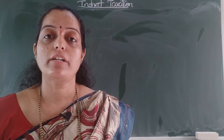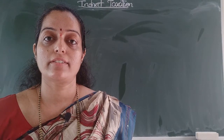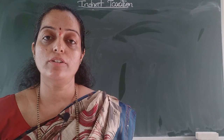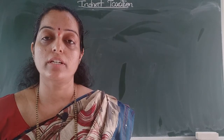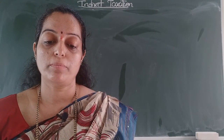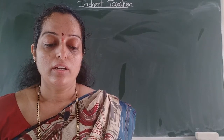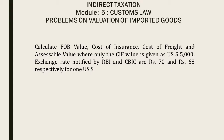Hello students, welcome back to the video lecture series of indirect taxation. Today we are going to continue with problems on customs duty, that is imported goods problems. You can refer the screen for the problem. Calculate FOB (free on board) value, cost of insurance, cost of freight, and assessable value where only the CIF value is given as US dollar five thousand.